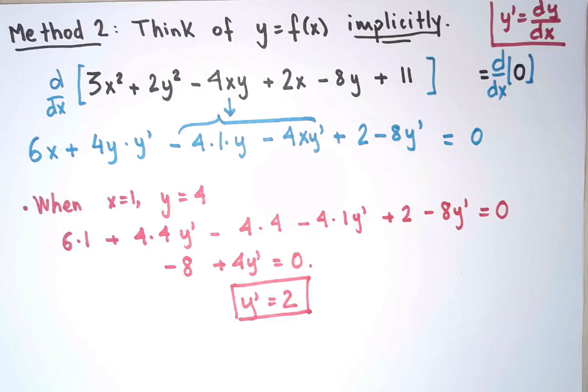Notice how this second method was so much simpler than the first one. The calculations were faster and easier. And this happens in general. Implicit differentiation is your friend. Don't be afraid of it. Even when we can solve explicitly for y, if we keep our equations implicit, the calculations tend to be much simpler.